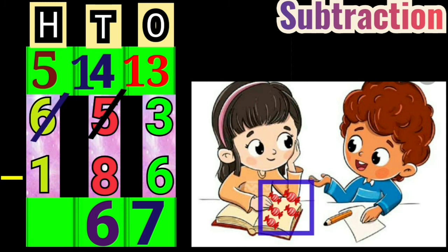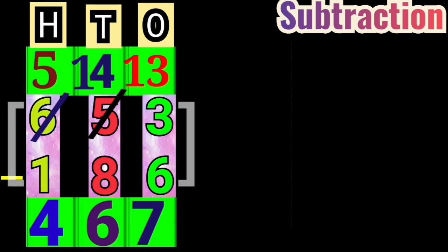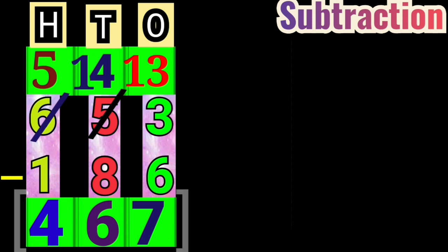Suppose, you have 5 chocolates. From that, you have given 1 chocolate to your friend. Now, how many chocolates do you have? Yes, very good, you are left with 4 chocolates. So, write down 4 in the 100th column. Here, the difference of 653 minus 186 is 467.